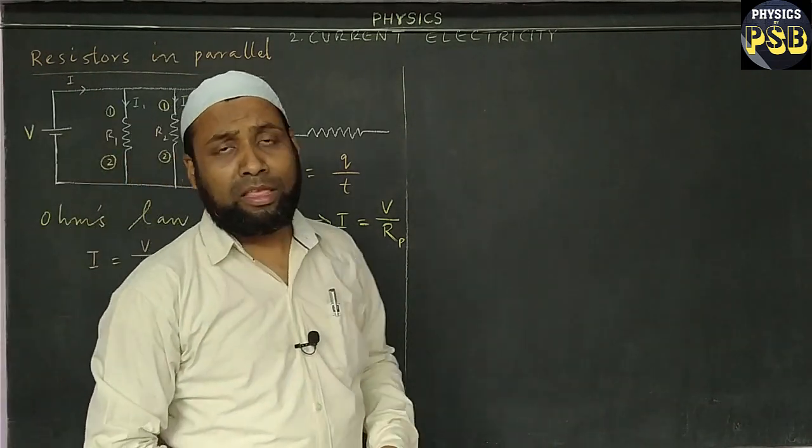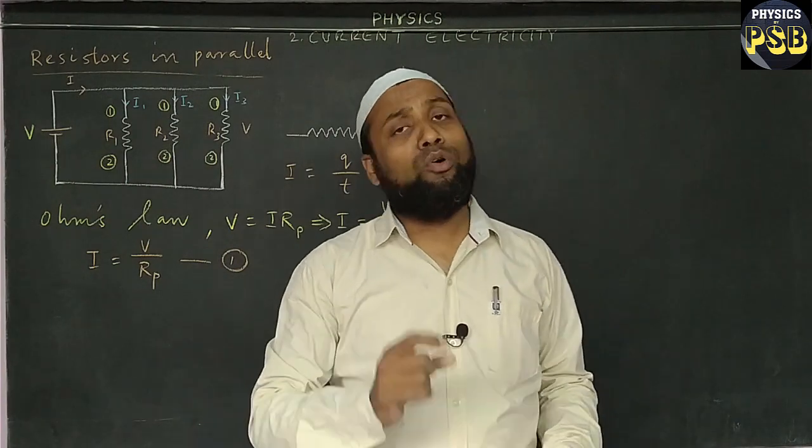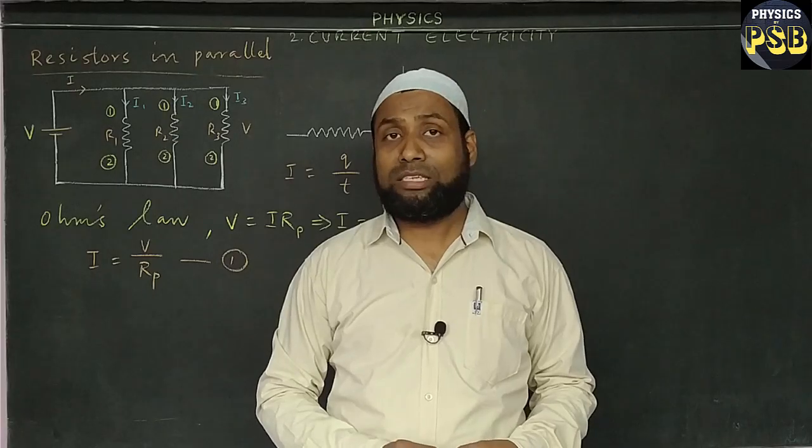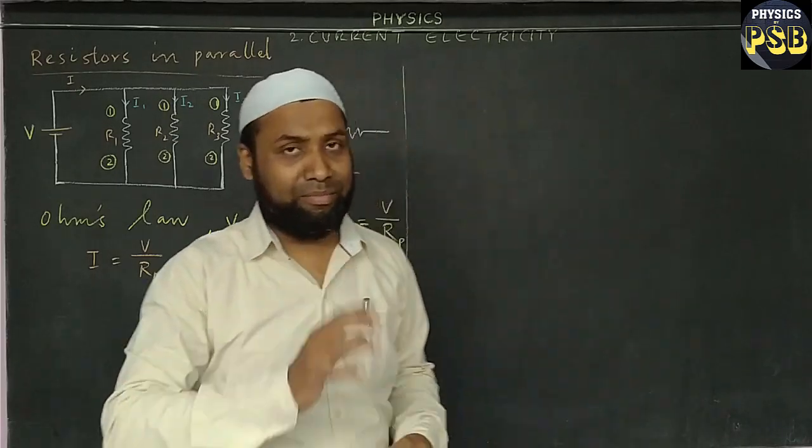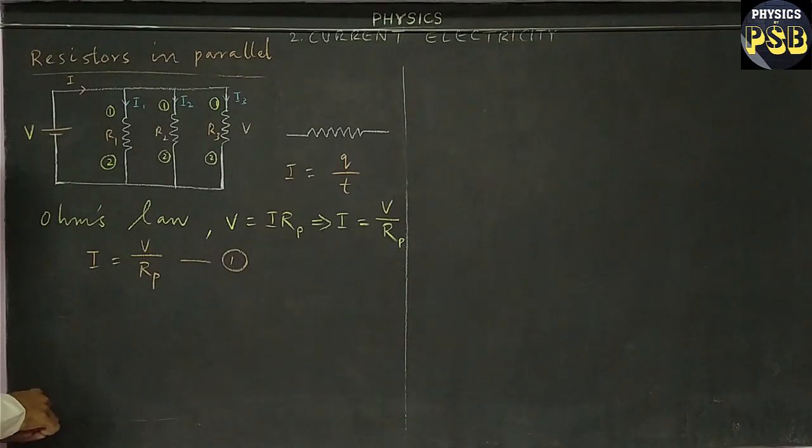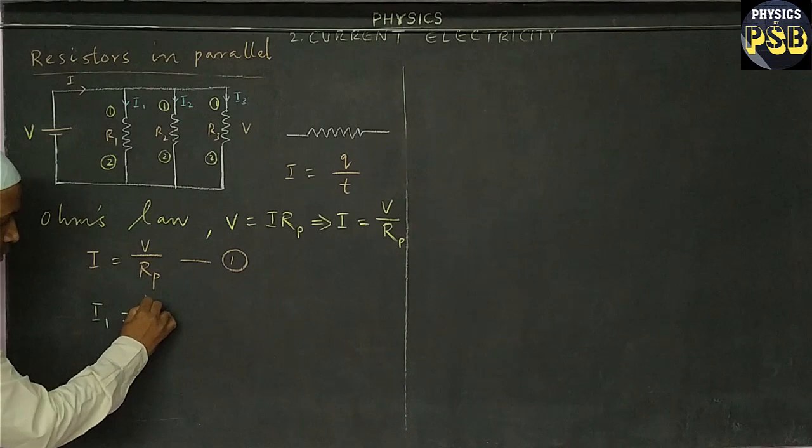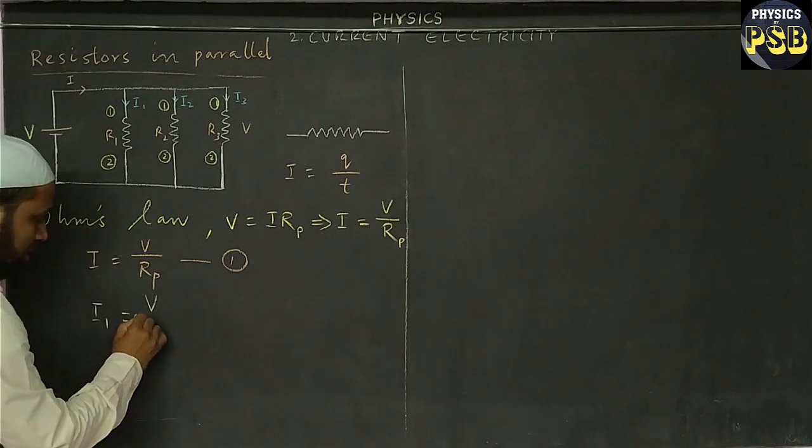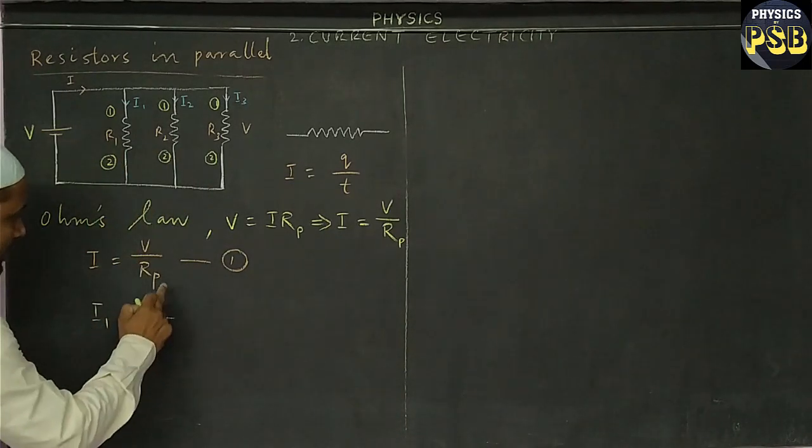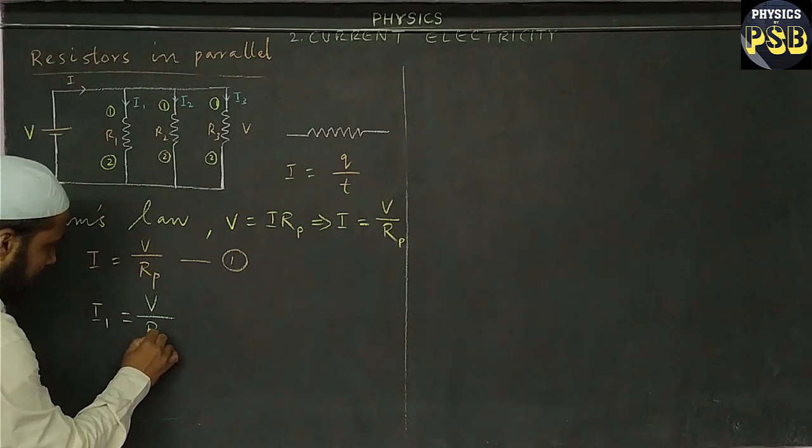Now in a similar way I will find out the value of I1, I2, and I3. One more thing I forgot to mention here: in the parallel combination, voltage throughout the circuit remains the same.